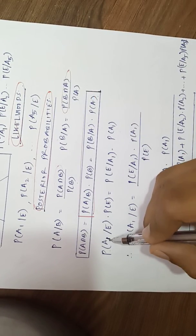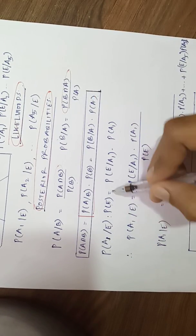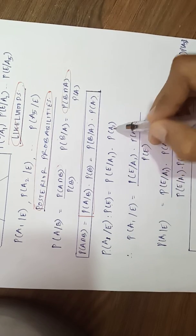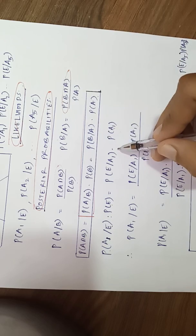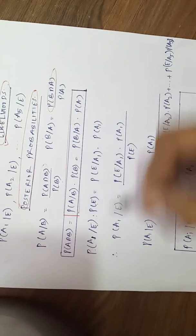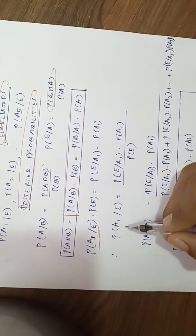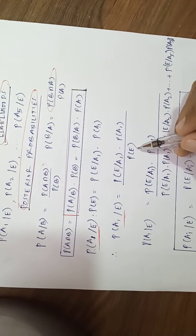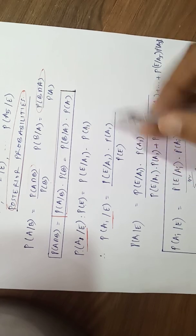So probability of a1 given e into probability of e is same as probability of e given a1 into probability of a1. This same theorem we have applied here. So a1 given e's probability can be written as this term shifted to denominator - P of e goes below.